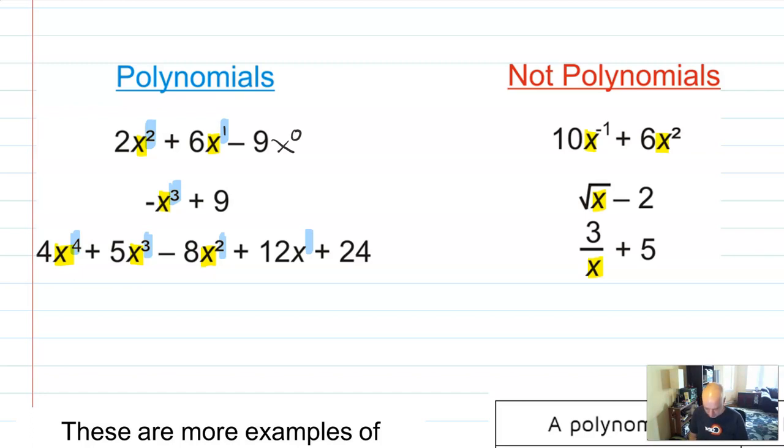And so having powers of x is important, and you could even think about this 9, for example, as being an x to the 0 power. So there is actually an x in each term in a polynomial,